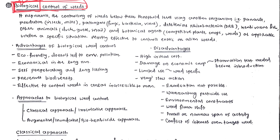Here we use different living organisms to control weeds. Basically, we are not completely controlling the weeds — we are managing the weeds, keeping them below the threshold level. Suppose there is a crop and there is a weed; up to a certain level we can allow the weed to grow.